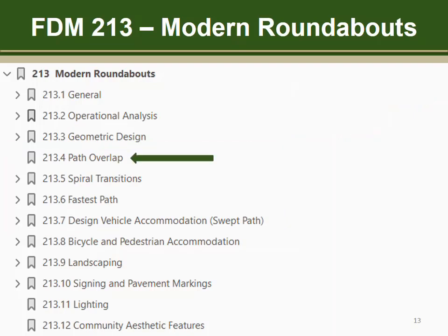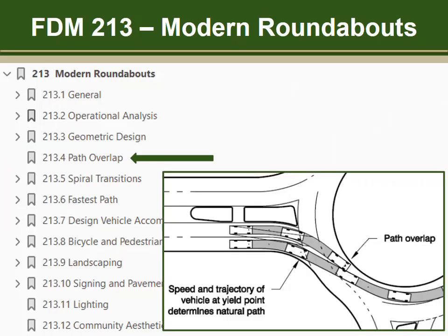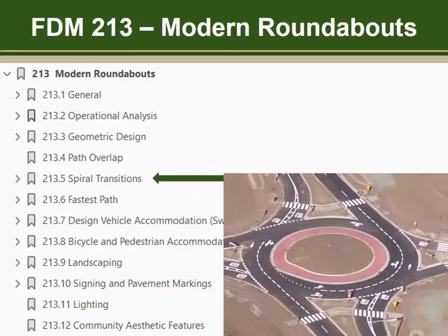The natural path of a vehicle is the path that it will take based on the speed and orientation imposed by the geometrics. Path overlap occurs when the natural paths of vehicles in adjacent lanes overlap or cross one another; it is most common on entry but can also occur on exit. Spiral transitions enable vehicles to reach the intended exit without the need to change lanes. One of the golden rules of good roundabout design is never require lane changing within the circulatory roadway.